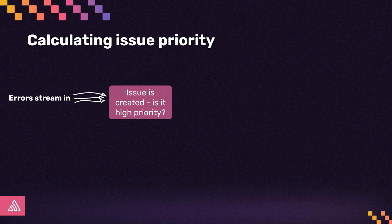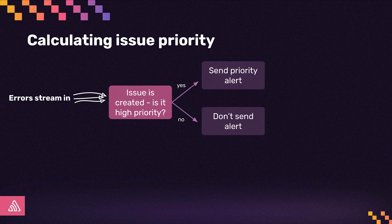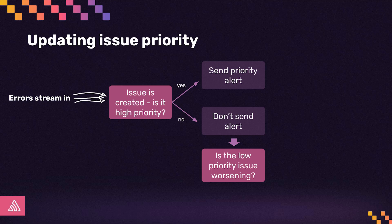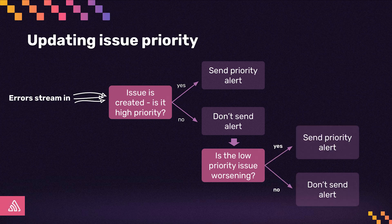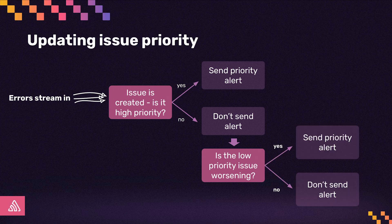The priority model analyzes incoming errors and identifies the ones that you are unlikely to engage with based on prior actions on similar issues. These issues will be automatically tagged as low priority and will not trigger new issue alerts or appear on your feed by default. In some cases, low priority issues can become bigger problems if they spike in volume. We've added safeguards where we'll automatically update the priority of those issues to high when we detect escalating volume. Our goal with these updates is to make each alert and issue viewed higher signal, meaning your team can spend more time working on what matters.